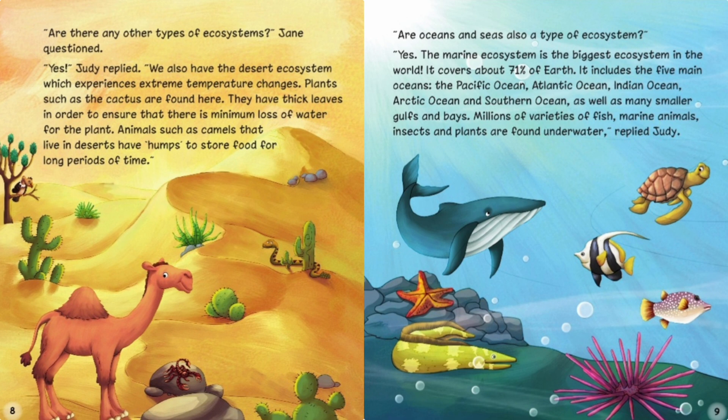'Are oceans and seas also a type of ecosystem?' 'Yes. The marine ecosystem is the biggest ecosystem in the world. It covers about 71% of earth. It includes the five main oceans: the Pacific Ocean, Atlantic Ocean, Indian Ocean, Arctic Ocean and Southern Ocean, as well as many smaller gulfs and bays. Millions of varieties of fish, marine animals, insects and plants are found underwater,' replied Judy.